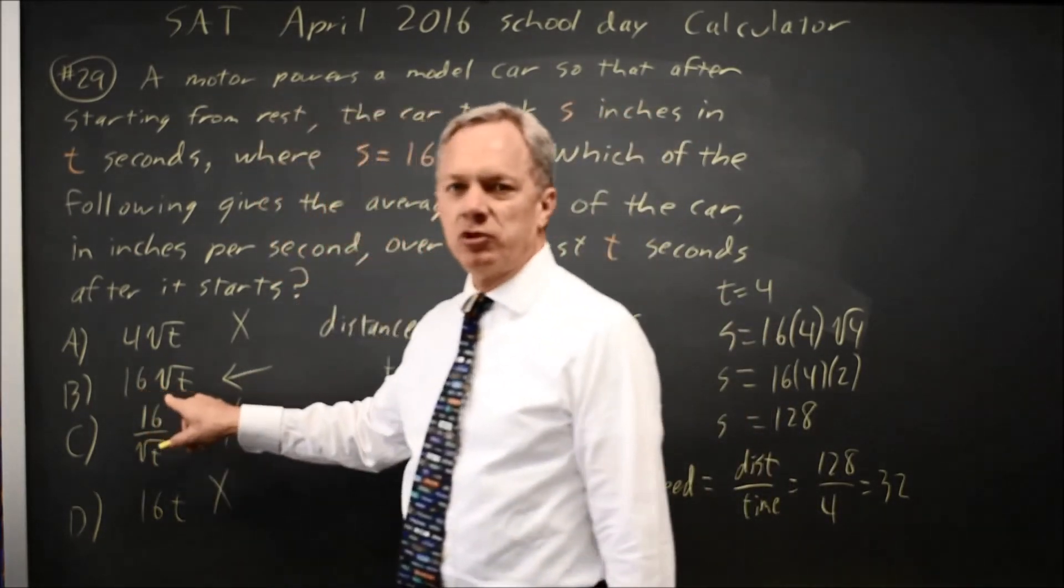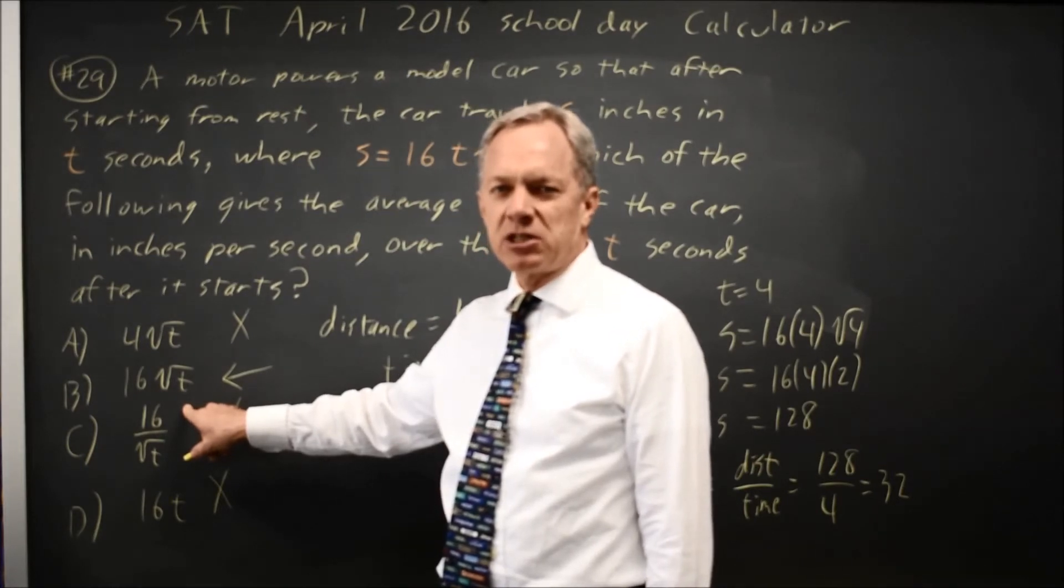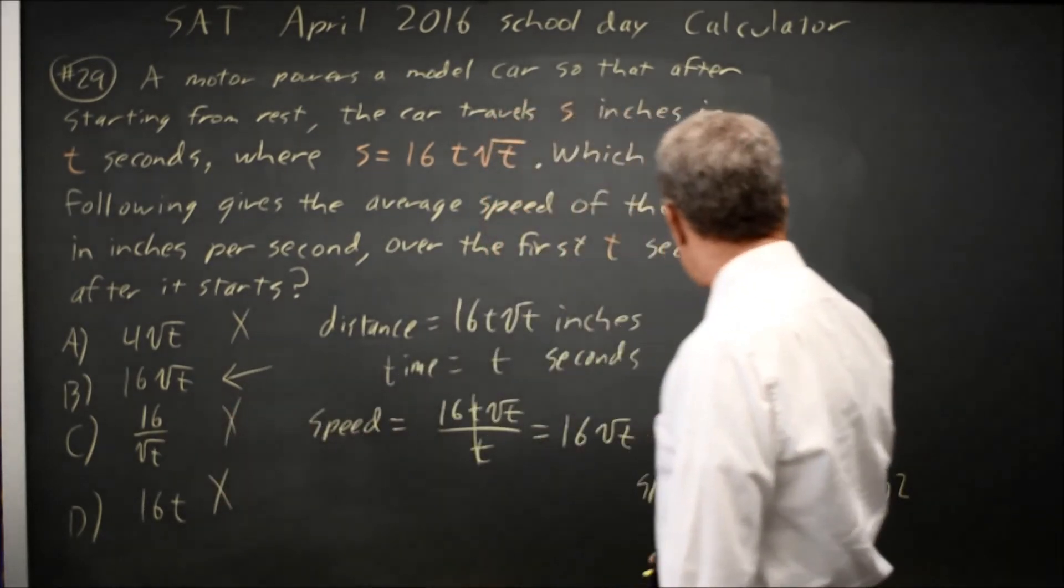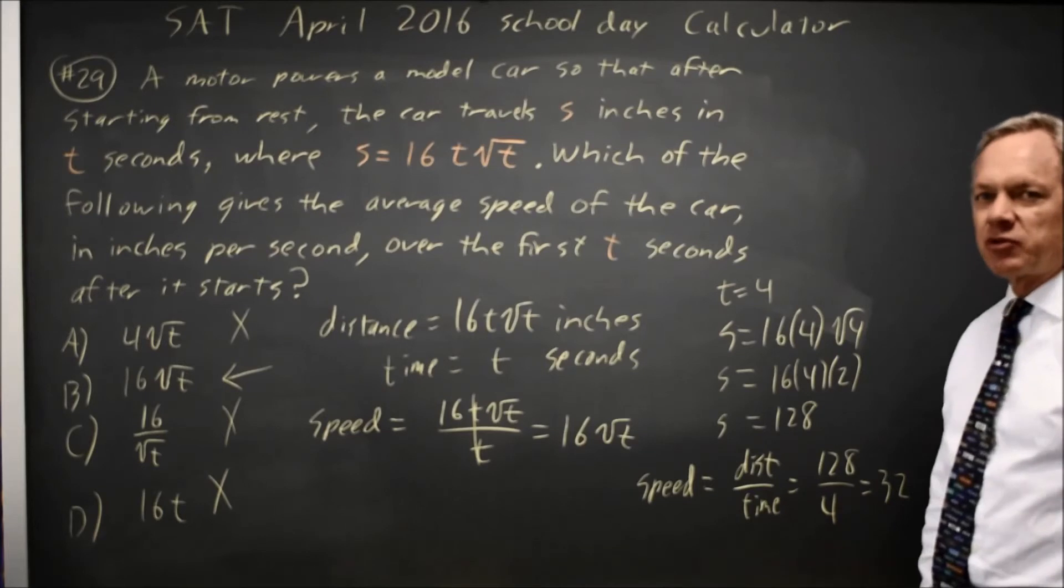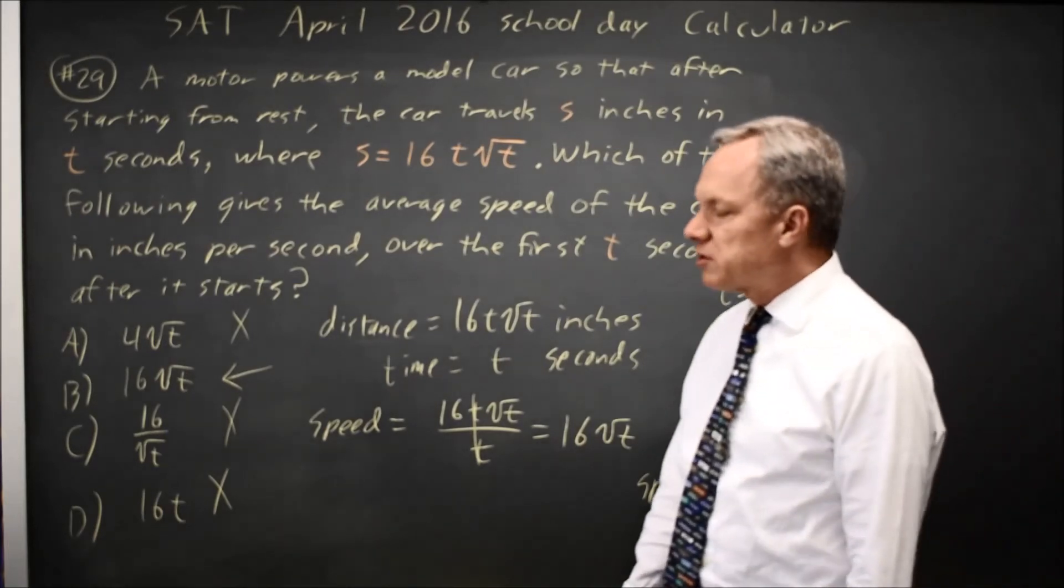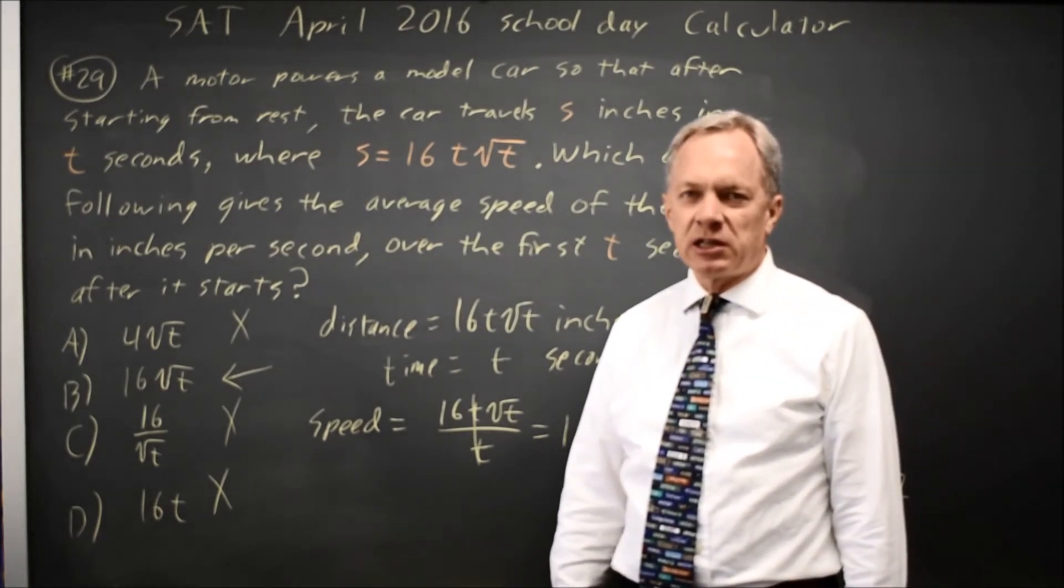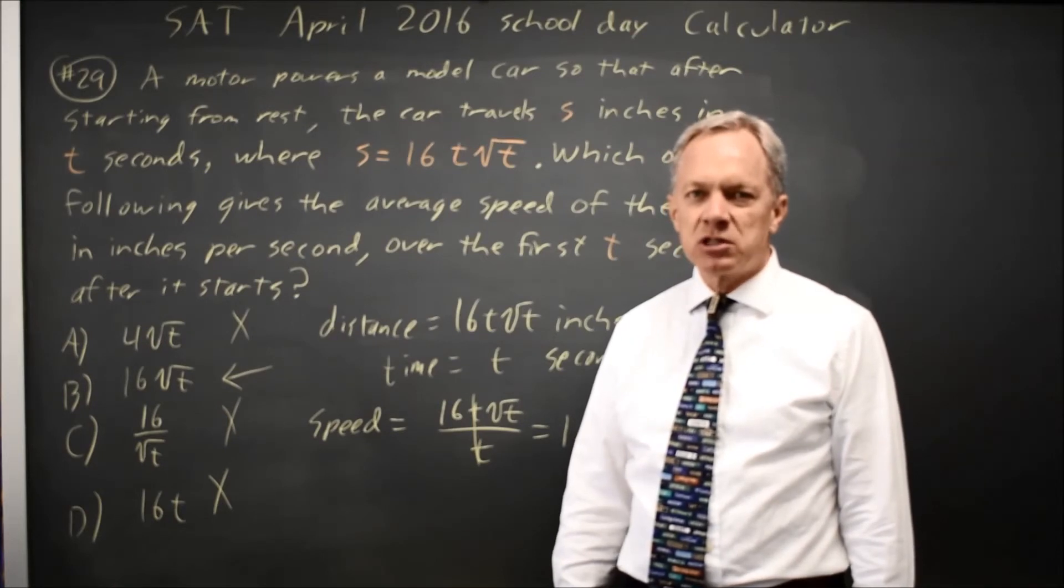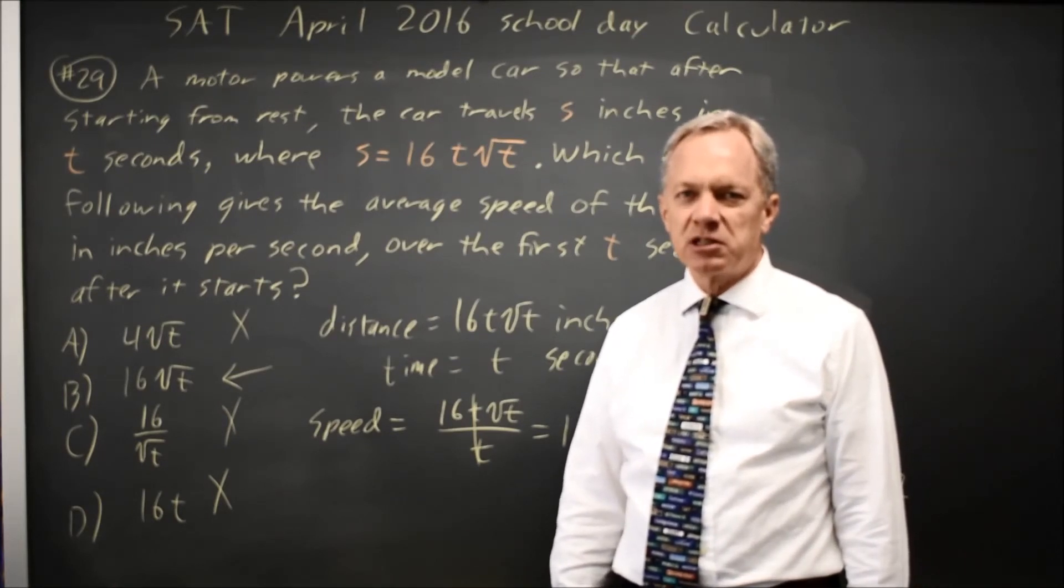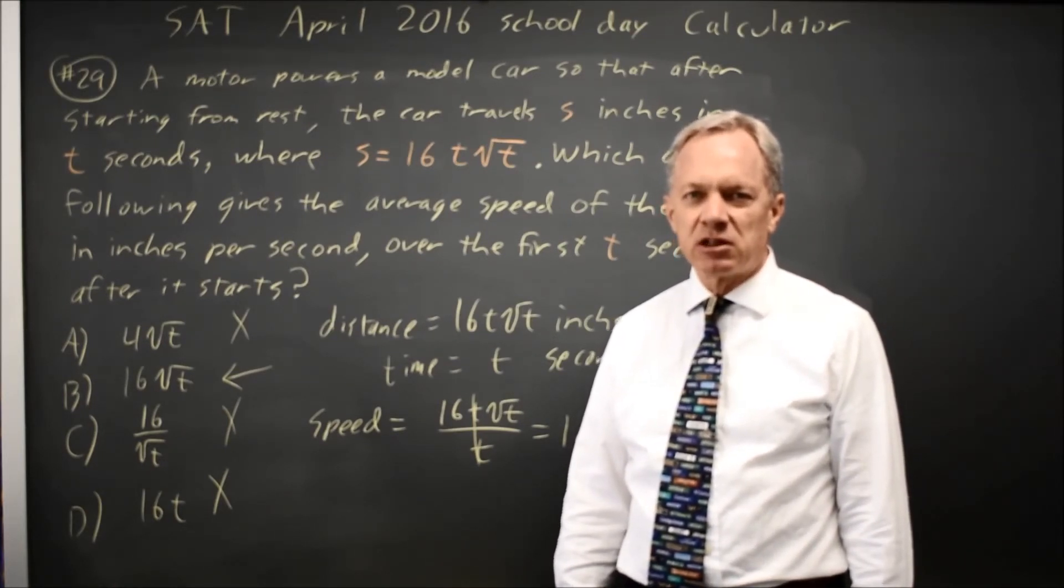And 16√t is 16√4 is 16 times 2 is 32, which matches what I got for distance over time for that particular value. So you can either solve it algebraically, like I did in my first solution, or solve it as arithmetic for a particular t value, and sometimes that's easier to think through.